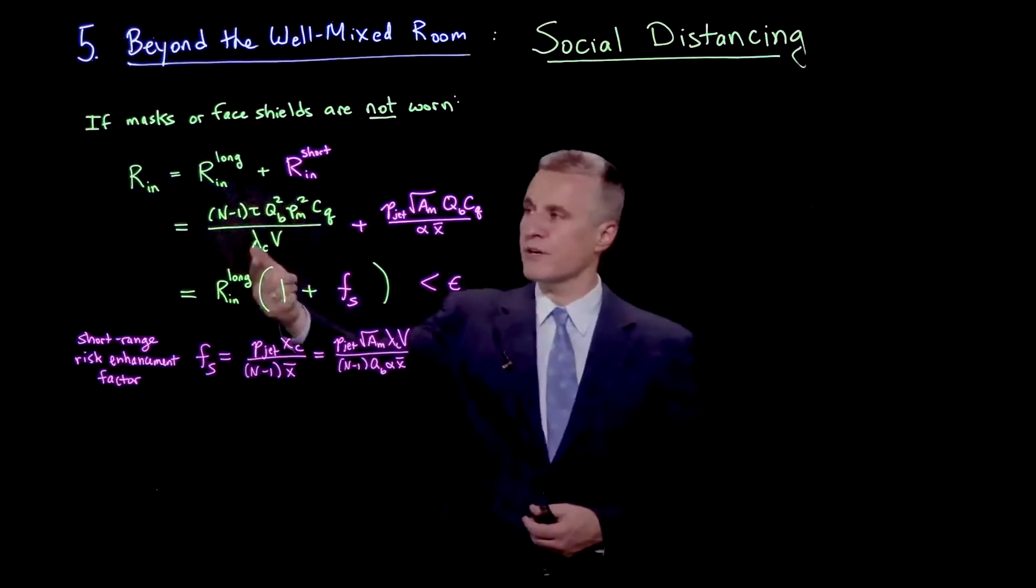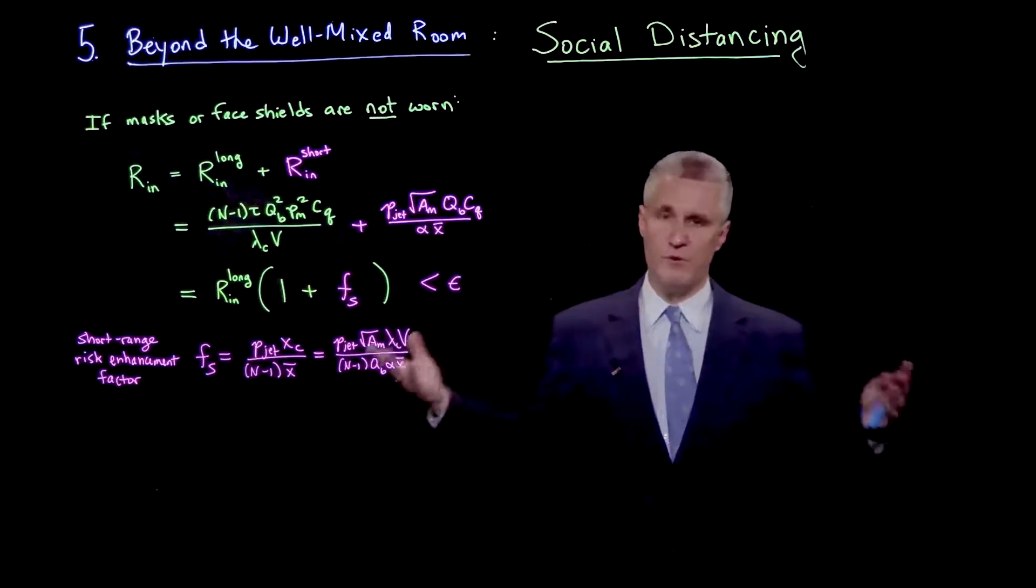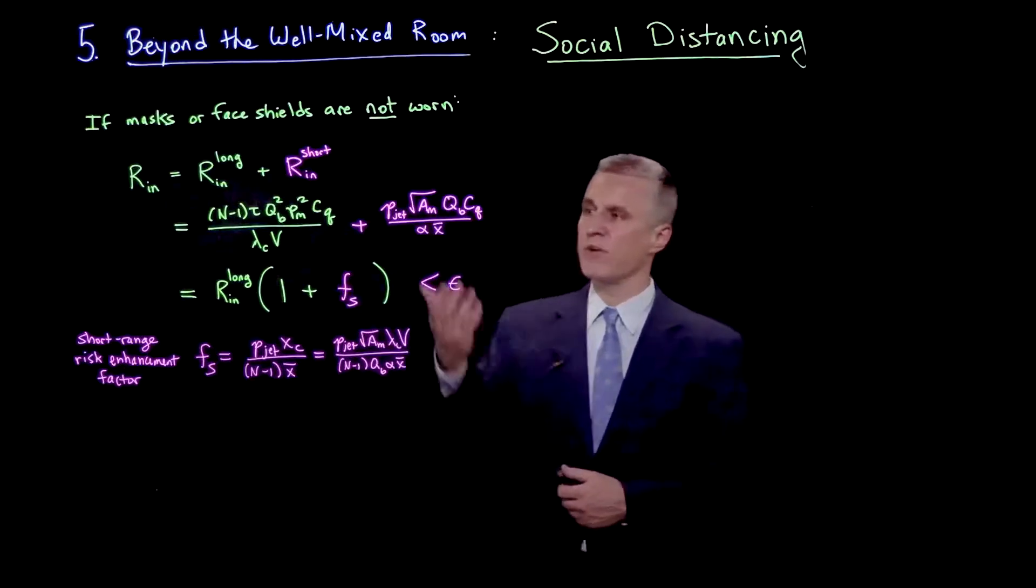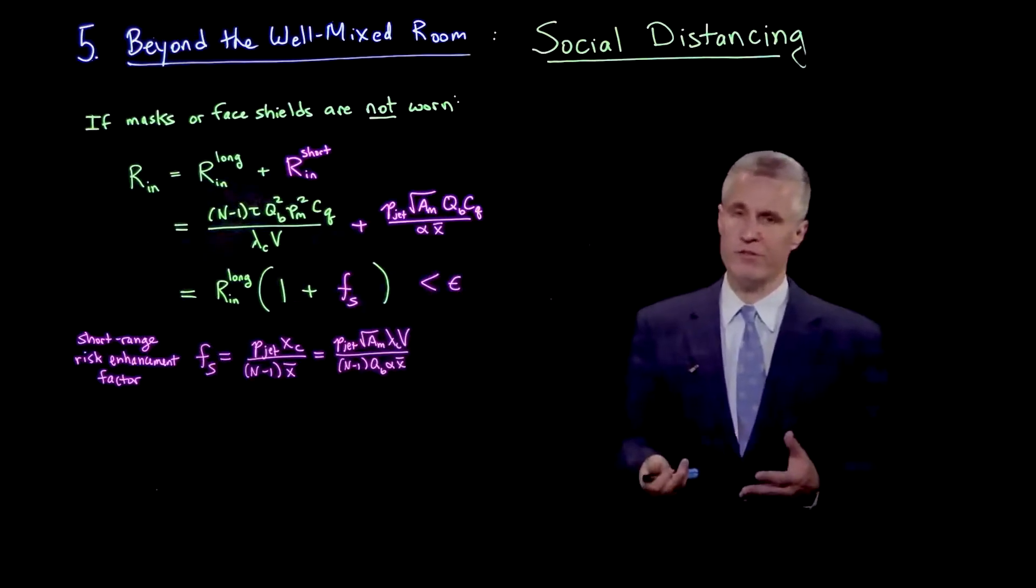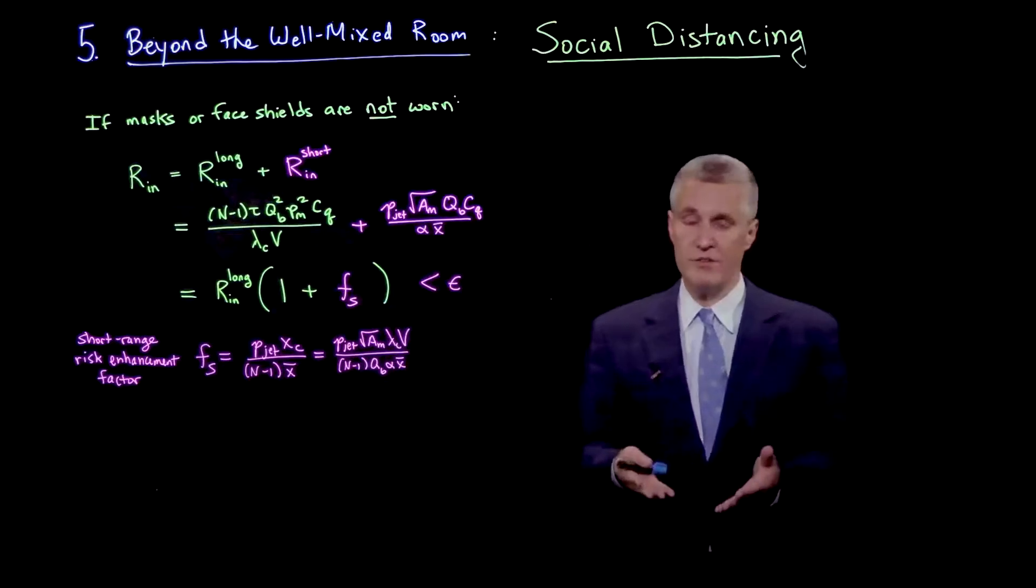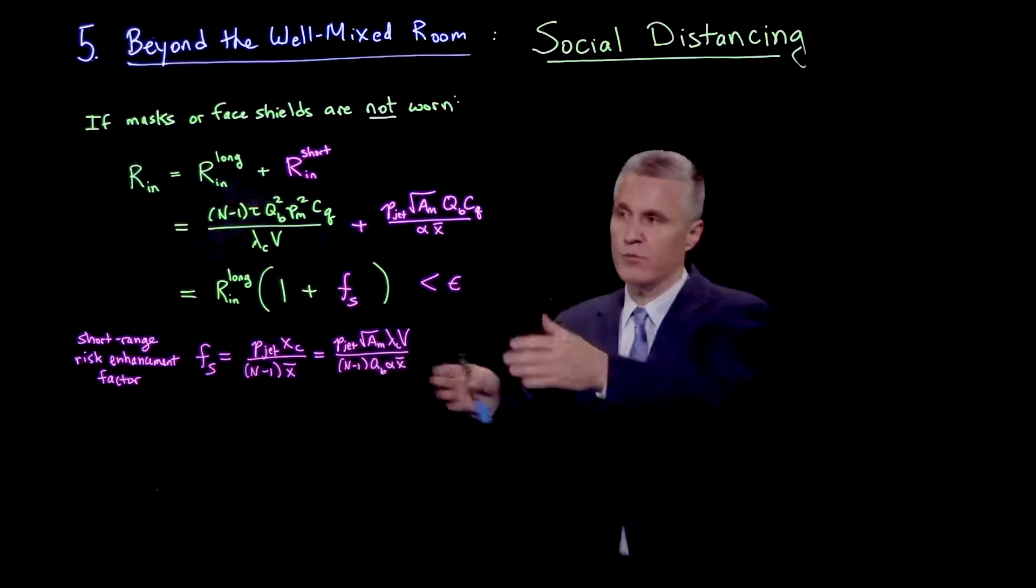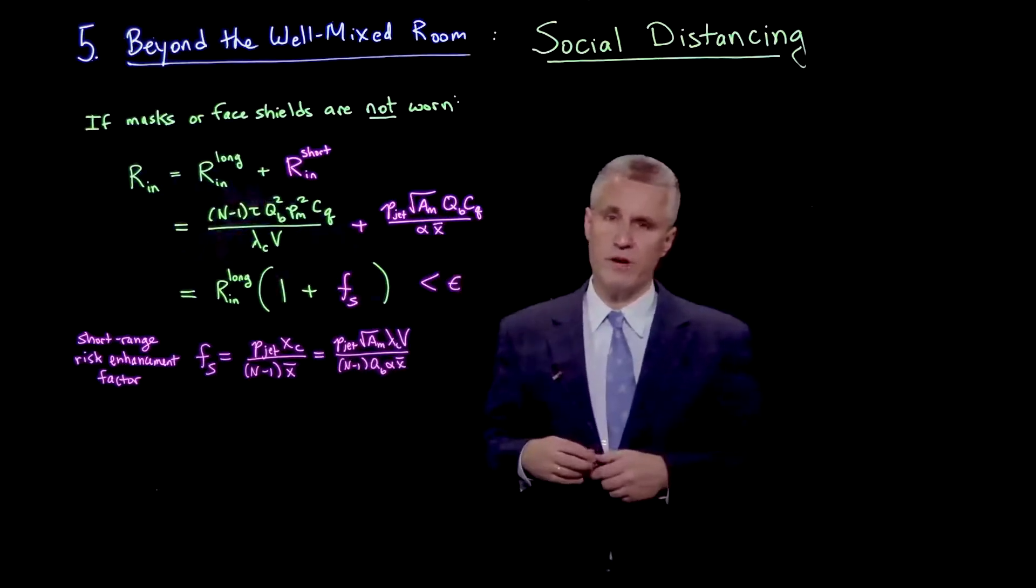We have our long-range airborne risk coming from respiratory aerosols that have become well-mixed into the background air, but we have a new term that comes from short-range transmission. In a worst-case scenario, we can imagine that as a wedge-like or cone-like plume, which we have just described.